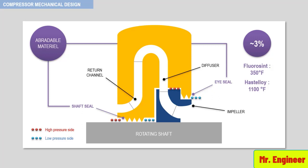Deterioration of labyrinth seals in a centrifugal compressor is one of the major causes of reduced performance. The eye seal is affected to a much greater extent than the shaft seal, since the dP across this seal is greater.